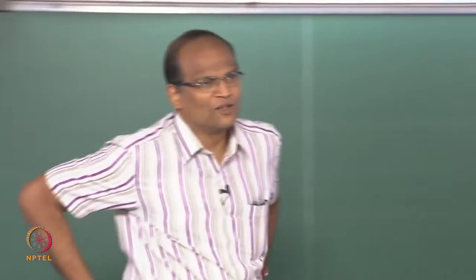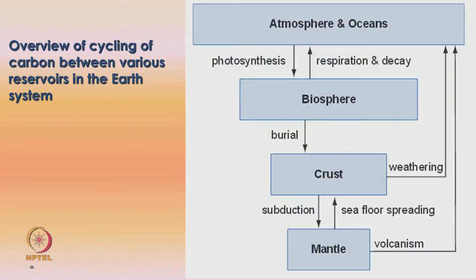The atmosphere and oceans, biosphere, crust, and mantle — this gives you an overview of the cycling of carbon between various reservoirs. At the top is basically atmosphere and oceans; at the bottom you have the mantle. From the atmosphere and oceans up to the biosphere, you have photosynthesis taking place in the terrestrial biosphere as well as in the ocean — the phytoplankton. Then respiration and decay — from the biosphere, carbon can again go into the atmosphere and oceans.